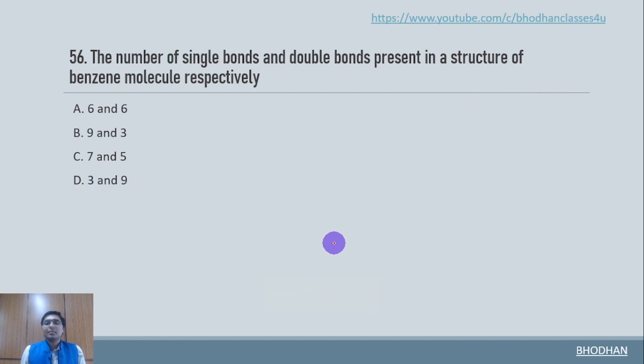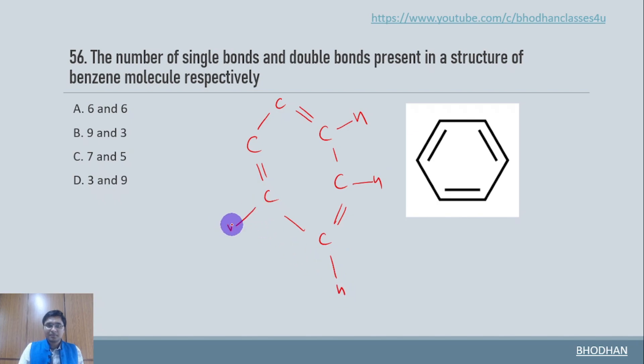Number of single and double bonds present in a structure of benzene. Let us understand the structure of benzene. So now this is the structure of benzene. If you carefully observe there are six carbon atoms and all of them are connected by alternate double and single bonds. And every carbon has to have four bonds. So the fourth one is basically with hydrogen.